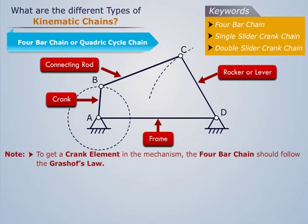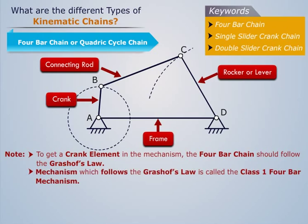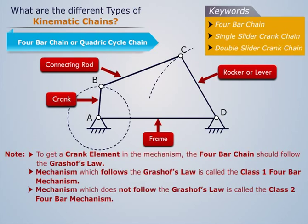Note that to get a crank element in the mechanism, the four bar chain should follow Grashov's law. The mechanism which follows Grashov's law is called the class 1 four bar mechanism, and the mechanism which does not follow Grashov's law is called the class 2 four bar mechanism.